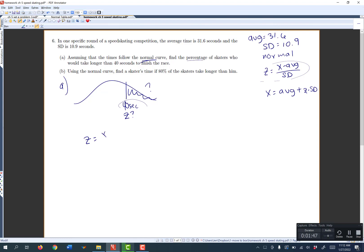z is equal to x minus the average over the standard deviation. I recommend writing out the formulas every single time, not only because it helps you not mess up, but it helps you memorize the formulas and remember what you're doing.